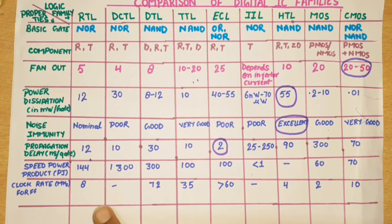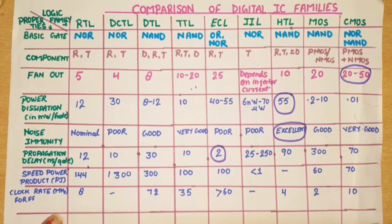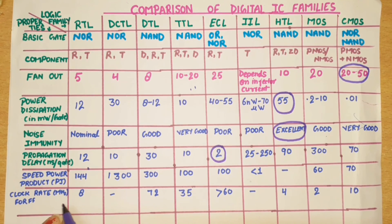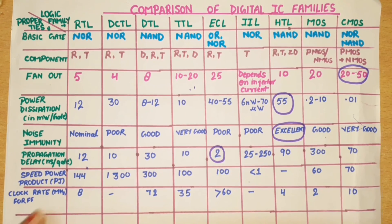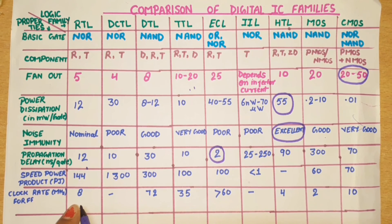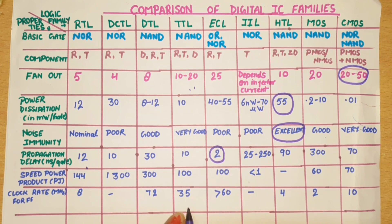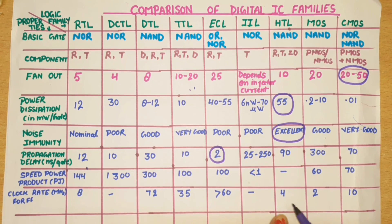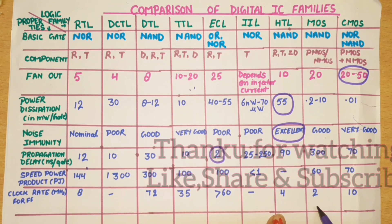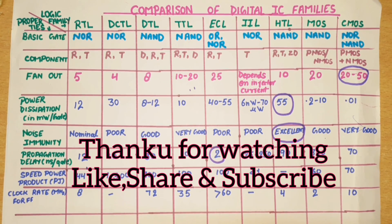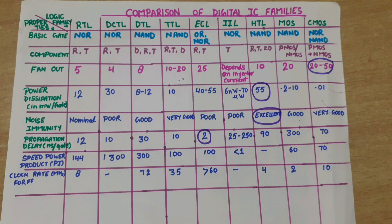Now clock frequency, given in MHz. RTL is 8 MHz, DTL is 32 MHz, TTL is 35 MHz, ECL is greater than 60 MHz, HTL is 4 MHz, MOS is 2 MHz, and CMOS is 10 MHz. ECL has the highest clock frequency. Thank you so much.